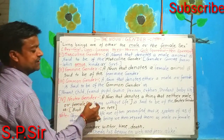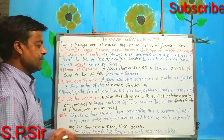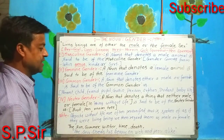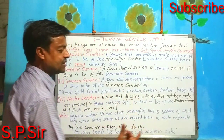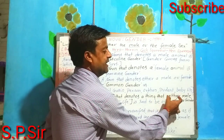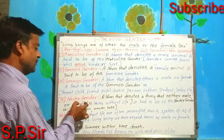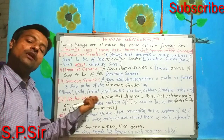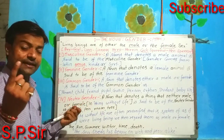Next point: neutral gender — called 'napunsak ling' in Hindi. Neutral gender is a noun that denotes things that are neither male nor female. That means it is not male, and it is not female.